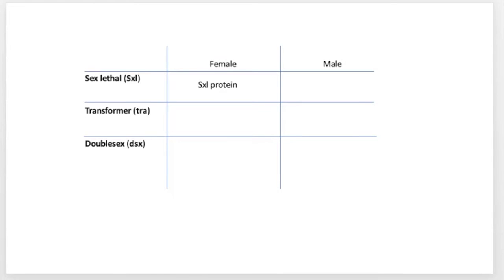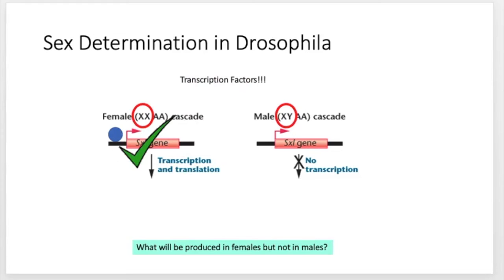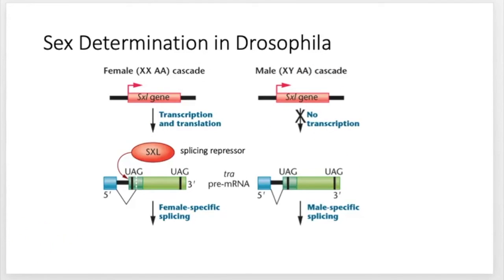To clarify: these are not the general transcription factors, but the specific transcription factors that can bind to cis-acting sequences and up- or downregulate transcription. In this case, they are upregulating transcription in the female, and in the absence of these upregulating transcription factors, we don't get male transcription. The SXL protein happens to be a splicing repressor. Splicing can be controlled by the interaction of proteins with cis-acting sequences located in the introns.